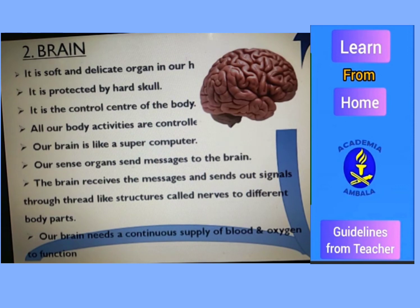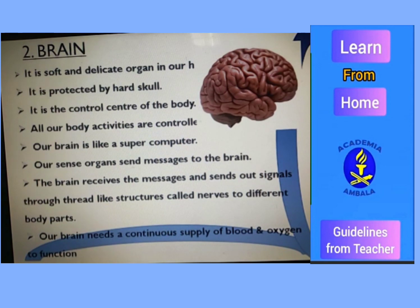The brain also has a team, and the team members are a large number of nerves which run through the whole body. Our sense organs send messages to the brain; the brain receives the messages and sends out signals through thread-like structures called nerves to different body parts. The brain also needs a continuous supply of blood and oxygen to function, which it gets from the heart. So our organs — whether internal or external — are interdependent and interconnected with each other.